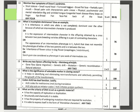The 13th question: mention 4 symptoms of Down syndrome. These include short stature, small round head, furrowed tongue, broad flat face, partially open mouth, broad palm with characteristic palm crease, physical, psychomotor and mental retardation, big and wrinkled tongue, congenital heart disease, many loops on fingertips, and flat back of the head. Any four symptoms mentioned will be awarded marks, each carrying half a mark.